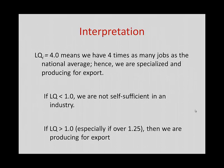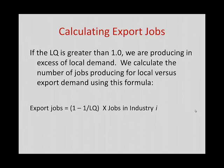A location quotient of 4 means we have 4 times as many jobs as the national average. As a consequence, we would consider ourselves specialized in that industry and therefore we are certainly producing for export. If a location quotient is less than 1, we assume we are not self-sufficient in that industry. If a location quotient is greater than 1 — especially greater than 1.25 or so — then we are producing for export. If the location quotient is greater than 1, we are producing in excess of local demand, but not all of those jobs are producing for export. Some are satisfying internal demand, so we have to use a formula to estimate the number of export jobs.